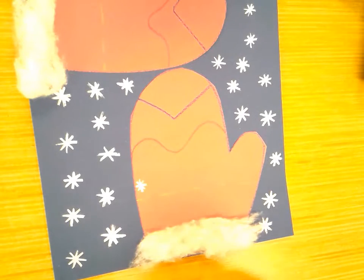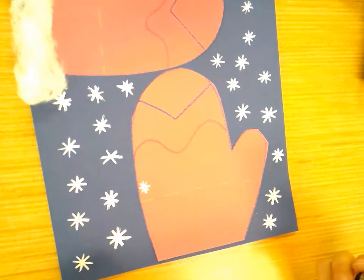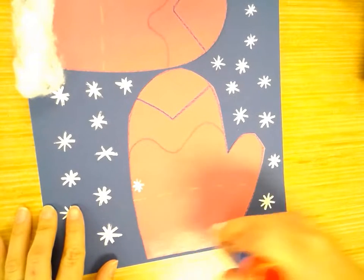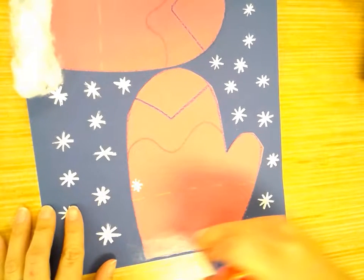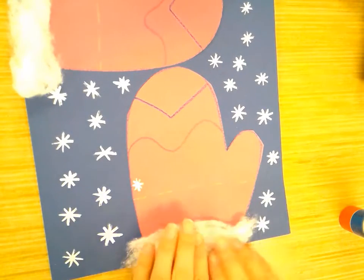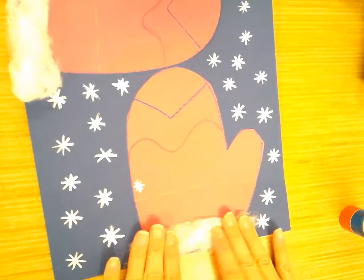Instead what I'm going to do is move the cotton off and put glue along the edge of my mitten and the cotton ball on top of it and press it down everywhere to make sure it sticks.